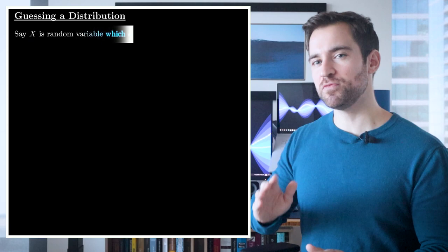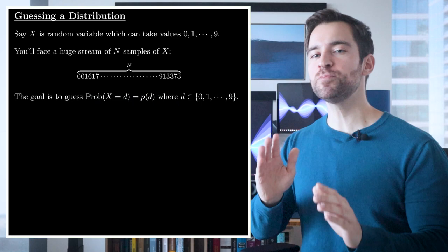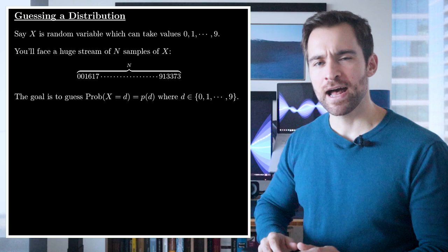To begin, let's start with a simple game. Let's say X is a random variable which can take the value 0, 1, 2, 3, up to 9. Let's also say it's going to spit out a huge stream of N samples. Now, your goal is to guess the proportion of this stream that is each of these digits.